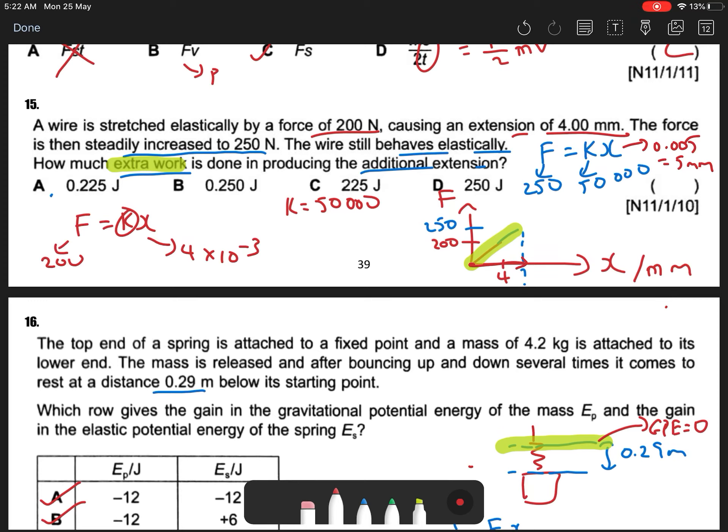So is from 0 to my question mark, which is 5mm. This is 5. So what the additional extension is 1mm, right? So 5-4 is 1mm.